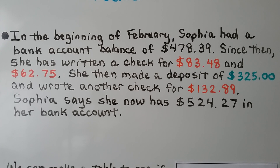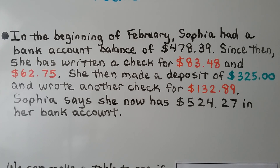In the beginning of February, Sophia had a bank account balance of $478.39. Since then, she has written a check for $83.48 and $62.75. Then she made a deposit of $325 and wrote another check for $132.89. Sophia says she now has $524.27 in her bank account.